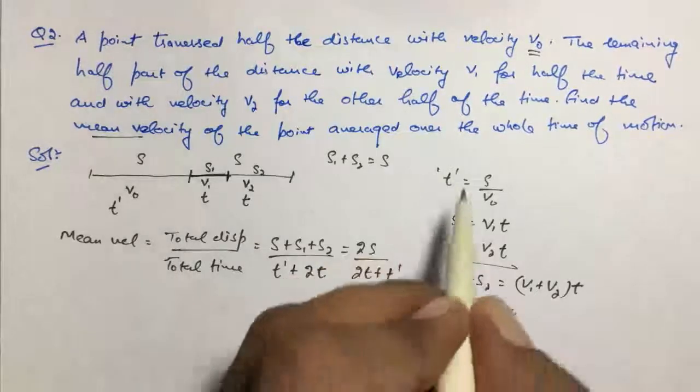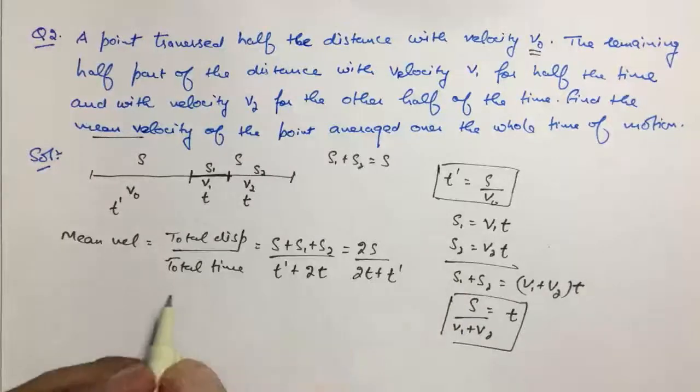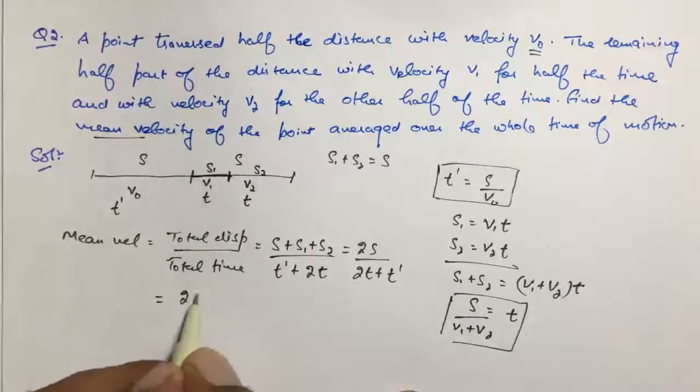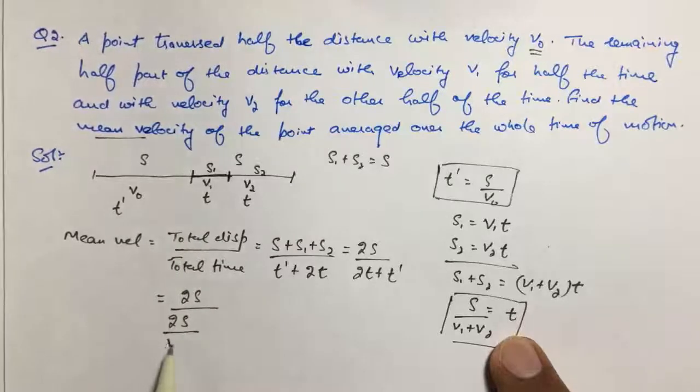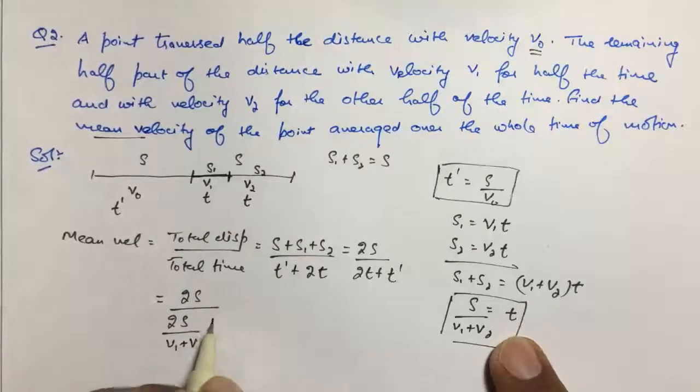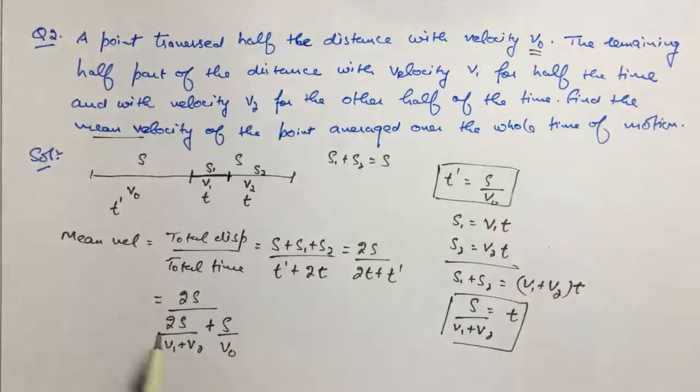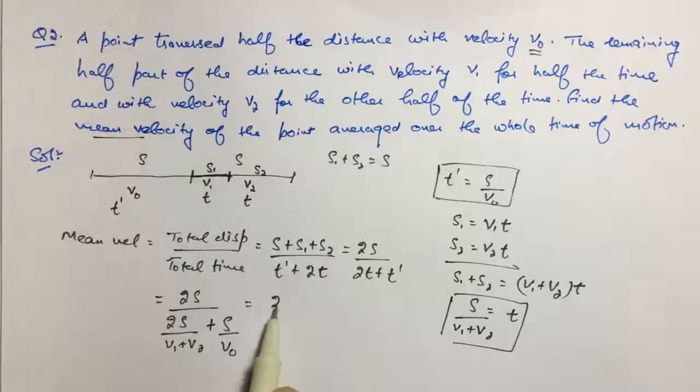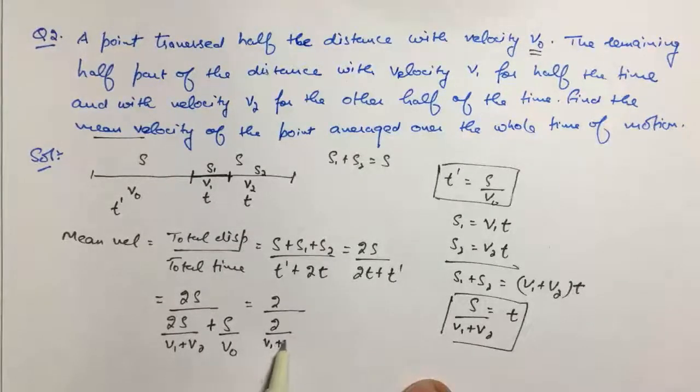Now put T′ and T in this equation. Mean velocity becomes 2S upon 2 times T, which is 2S upon (V₁ plus V₂) plus S upon V₀. We can cancel S, so we are left with 2 upon [2/(V₁ plus V₂) plus 1/V₀].